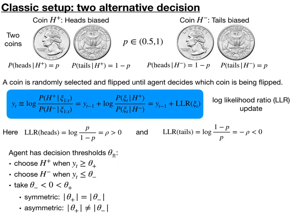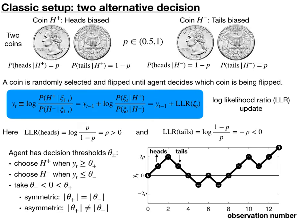How does an agent make a decision? The best way to do this in order to manage both the speed and the accuracy decision is simply to set a threshold on the decision. There's a threshold theta plus where if y goes above that you would choose the heads biased coin. Threshold theta minus where the agent chooses the tails biased coin if y is below theta minus. In this case, theta minus is less than zero and theta plus is greater than zero. This case of symmetric thresholds is given by where the absolute value of the thresholds is equal.